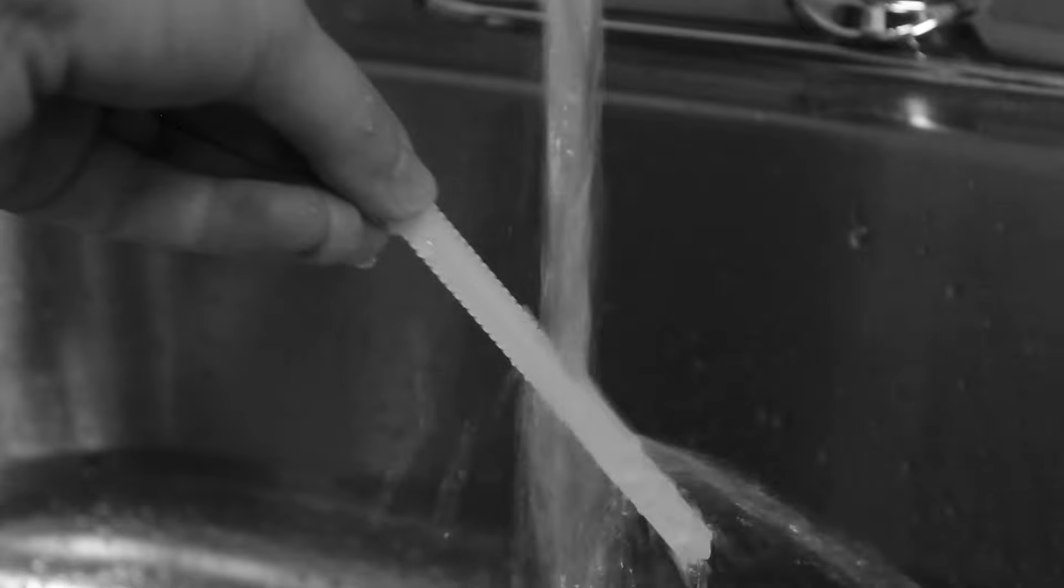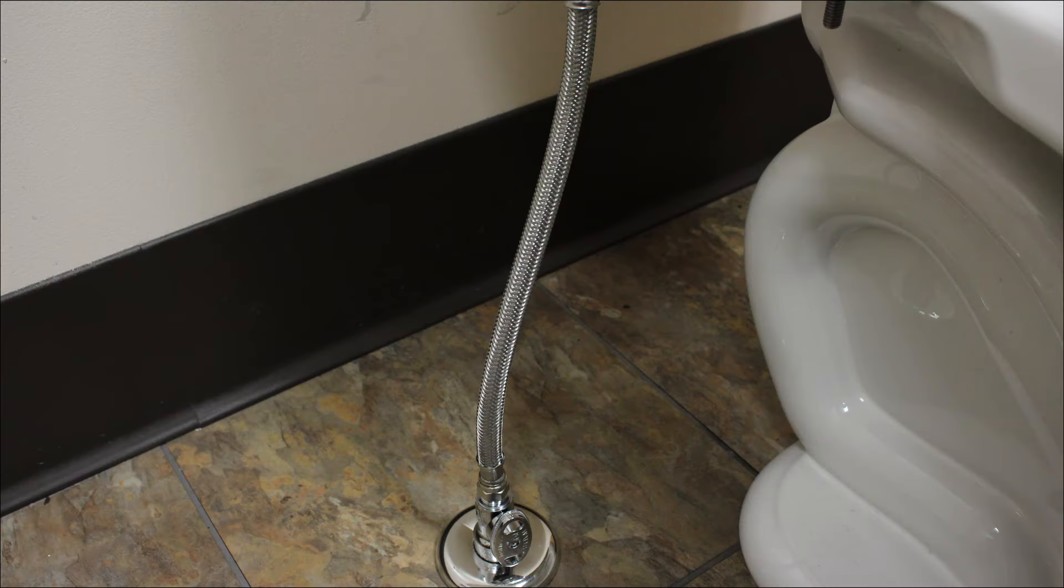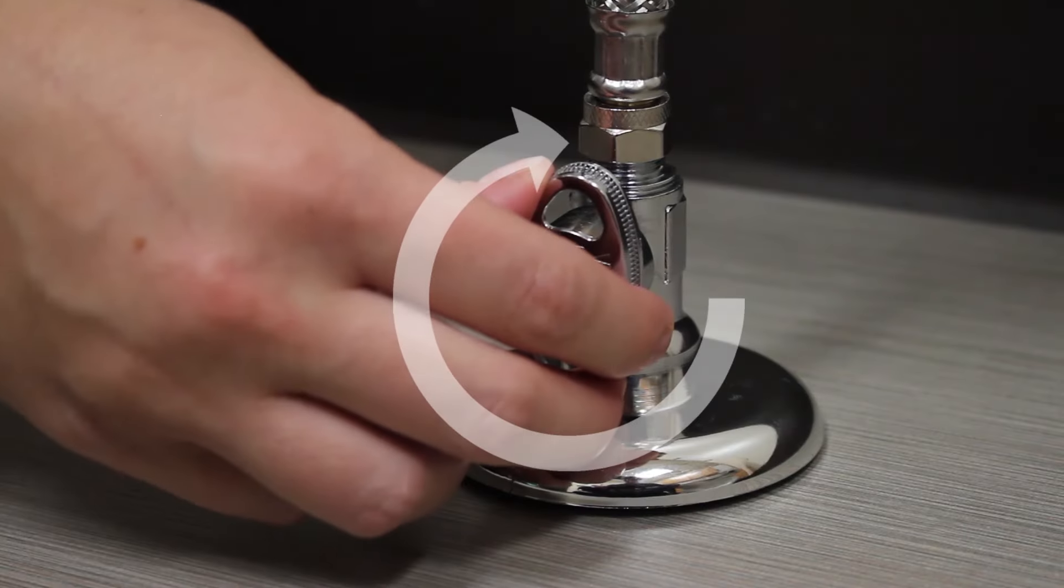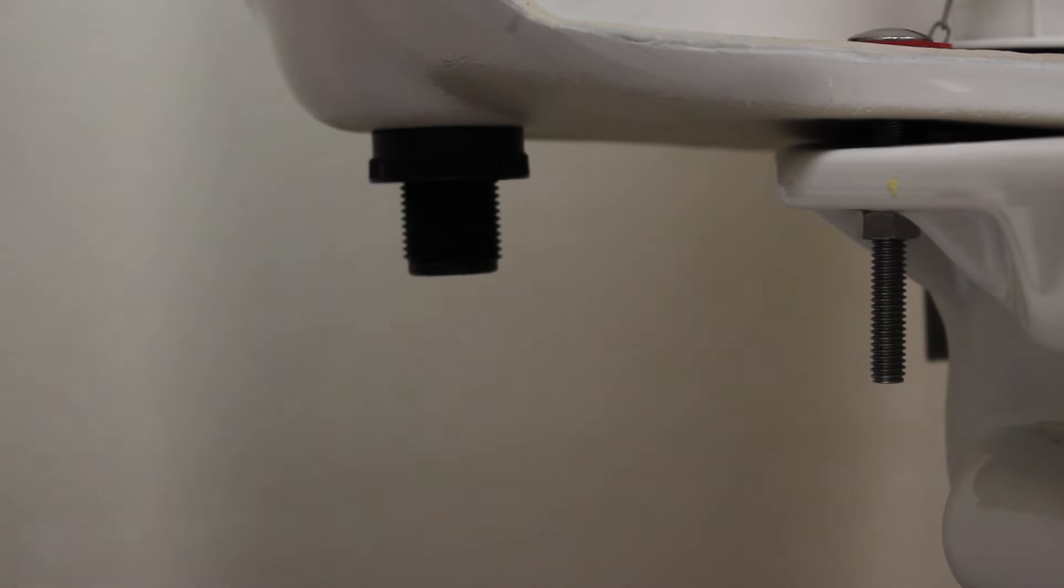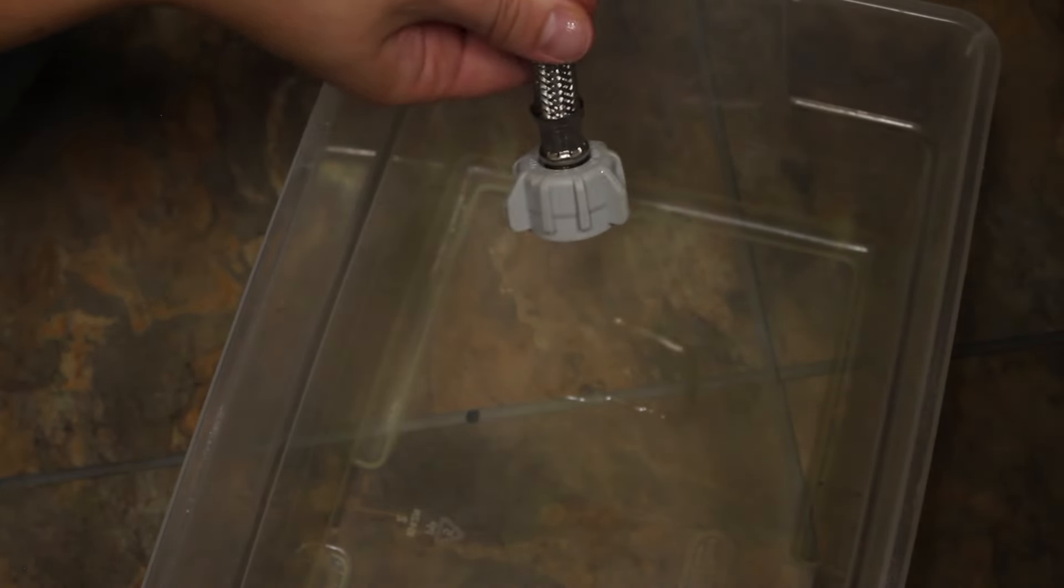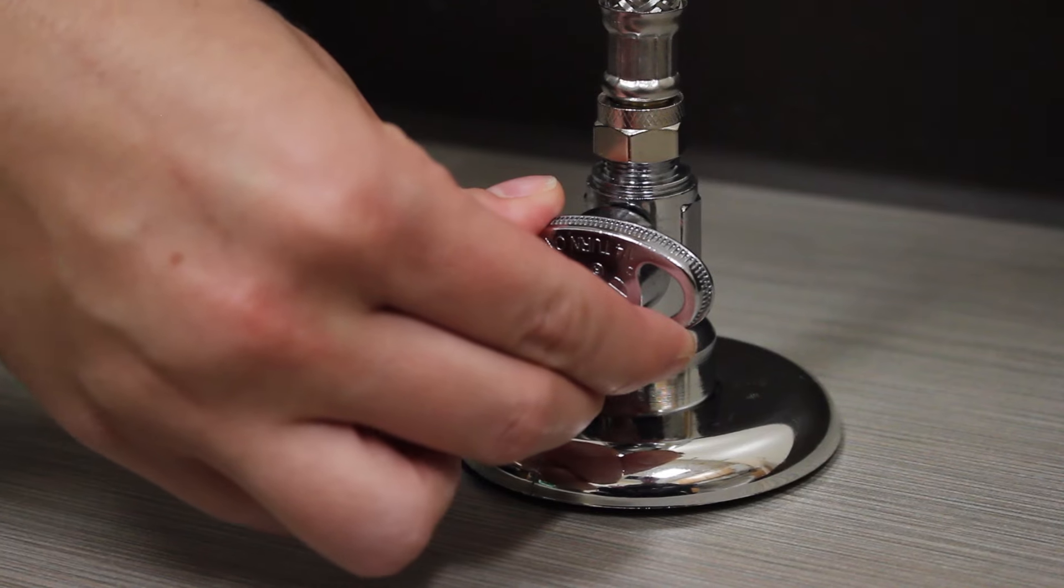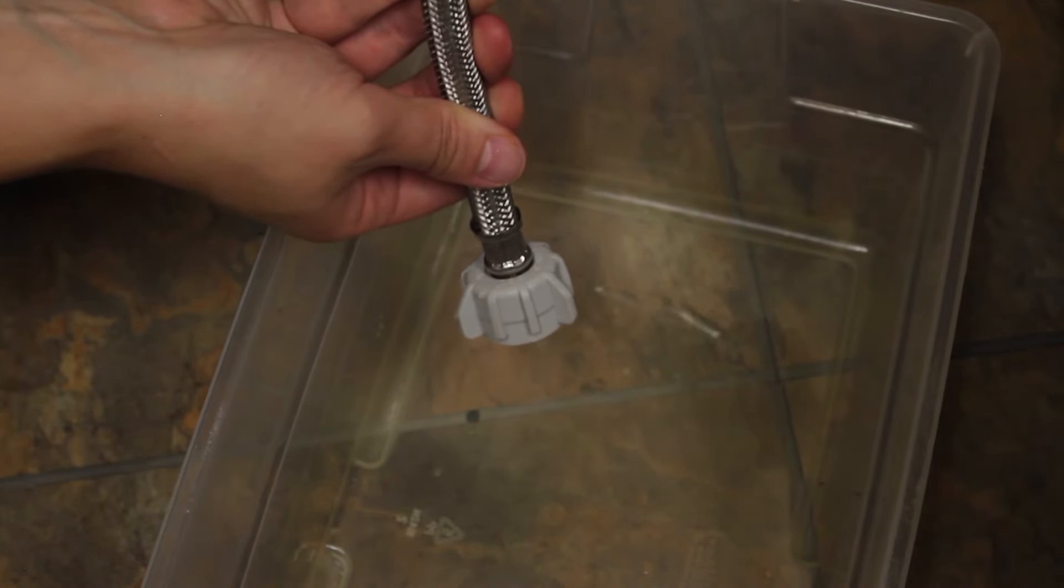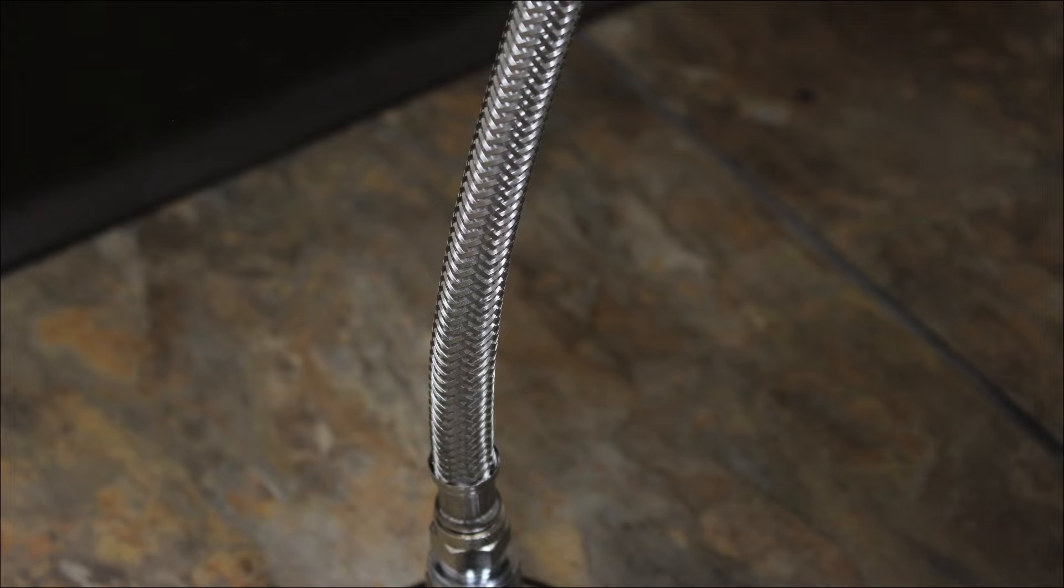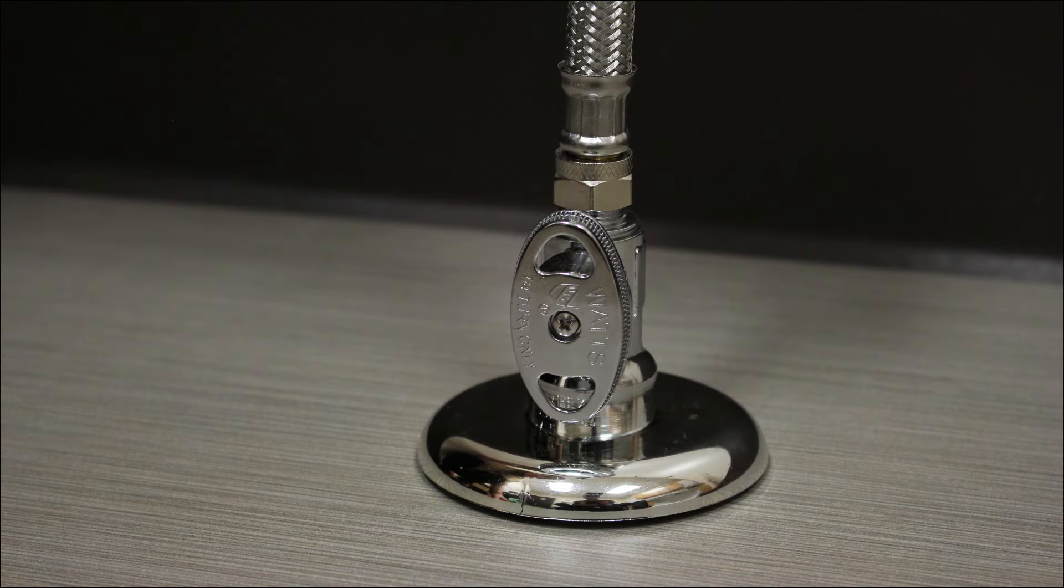If cleaning the strainer does not solve the problem and you have a flexible water supply line, turn the water supply off. Disconnect the supply line from the toilet fill valve and place the end into a bucket. Slowly turn the water supply line on. If there is still little to no water flow, there is likely a restriction in the water supply line or a problem with the incoming water supply.